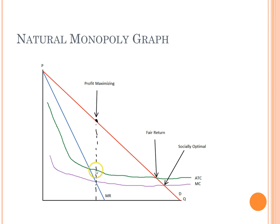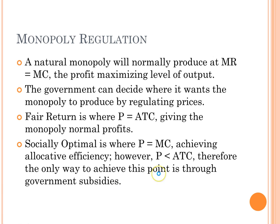That high price and low output causes the same problem the natural monopoly was supposed to solve. So the government can choose to step in and force the monopoly to produce at either the fair return point or the socially optimal point. The fair return point is where price equals average total cost. The socially optimal point is where price equals marginal cost. A monopoly will want to maximize its profit, but sometimes the government will deem that output too low for the good of society. By putting price restrictions, the government can force the monopoly to produce at fair return, where the monopoly can recoup the cost of production. At the socially optimal point, price is less than average total cost, so the monopoly will never choose to produce there because it's losing money — the government then has to subsidize production and give the monopoly money to produce at this point.